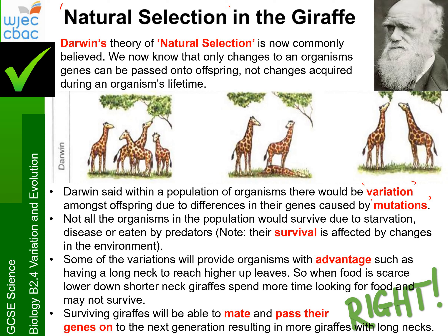They would be looking for you to explain that these differences are caused by mutations in the genes. That some of the population would survive because it would be an advantage to have these differences. And if it's an advantage and you survive, you can mate or breed and pass your genes on. Whenever you're answering a question on natural selection, we're looking for these words, and I'll come up with a little thing to help you remember them in order. Please pause the video and give me an explanation of Darwin's theory of natural selection — you can use the example of the giraffes if you like.